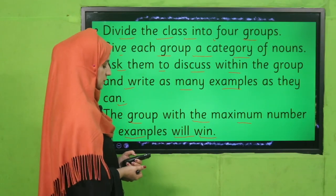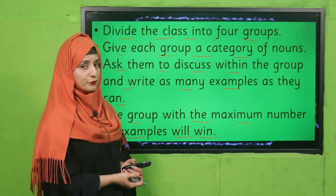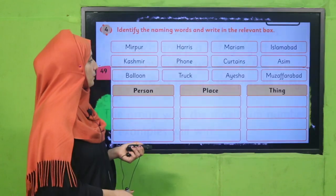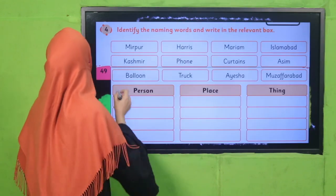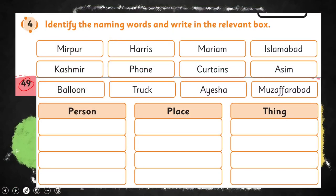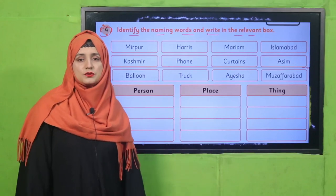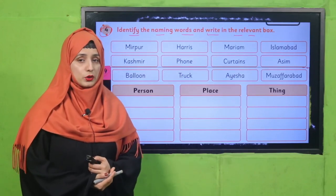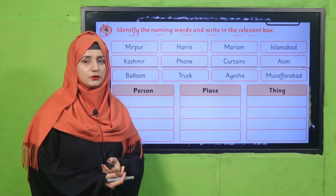Good job! I hope you have done it and can now name different things under different categories of naming words. Now on page number 49, there is Question Number 4 — identify the naming words and write them in the correct box: Person, Place, or Thing. These words are given and you have to write them in their correct column. This is an individual activity — pause the video and perform this activity in your book.